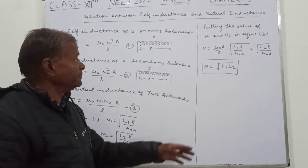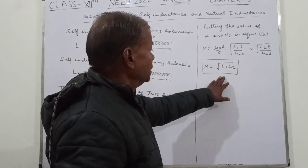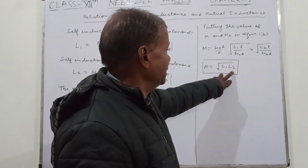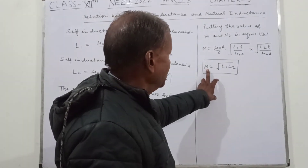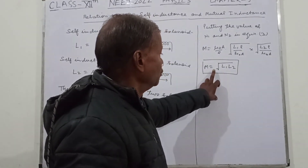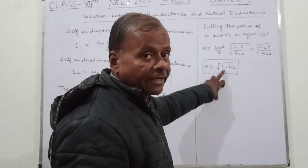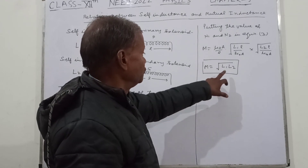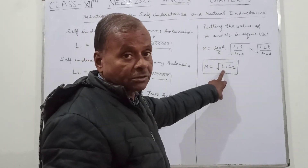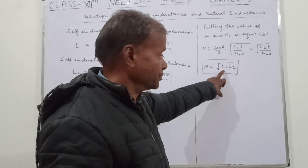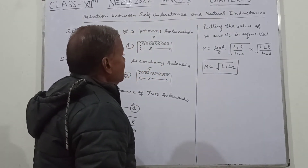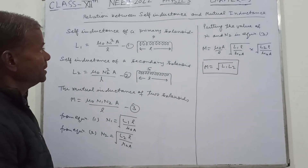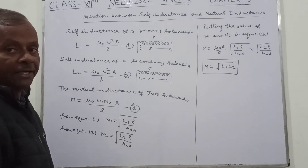So you can see that with L1 and L2, we have three quantities: M, L1, and L2. If any two of the quantities are known, then the third can be calculated. Also, M is equal to the square root of the product of the self-inductances of the two coils. This is the relation between self-inductance and mutual inductance.